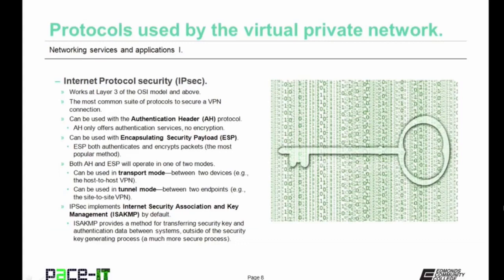The big protocol for VPNs is called Internet Protocol Security — IPSec — which isn't actually a single protocol but a whole set of protocols. IPSec works at Layer 3 of the OSI model or above and is the most common suite of protocols used to secure a VPN connection. IPSec can be used with the Authentication Header protocol — AH — which only offers authentication services but no encryption. Or IPSec can be used with Encapsulating Security Payload — ESP — which both authenticates and encrypts the packets, and is the most popular method of securing a VPN connection.